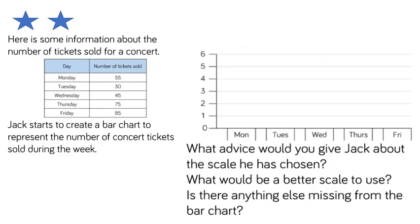For the two-star task, here is some information about the number of tickets sold for a concert. The information is presented on a table with the days of the week and the number of tickets sold. On Monday 55 tickets were sold, Tuesday 30 tickets, Wednesday 45 tickets, Thursday 75 tickets, and on Friday there were 85 tickets sold.